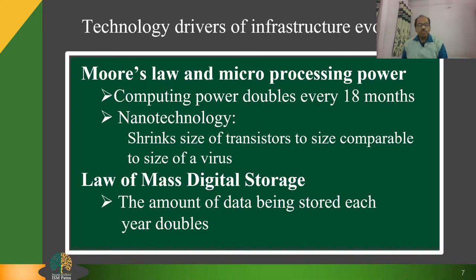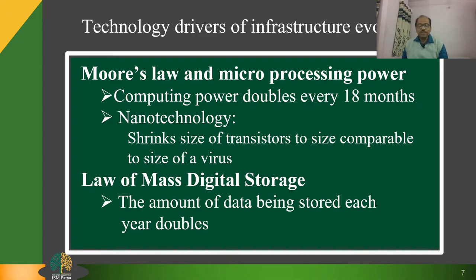Now we will look at a law known as Moore's Law, which states that the number of transistors on a chip doubles every 18 months, computing power doubles every 18 months, and the price of computing falls by half every 18 months. Even now, this trend is likely to continue, with transistors reaching the size of viruses — the smallest form of life.